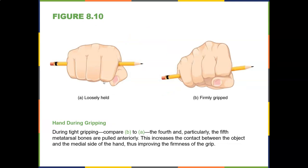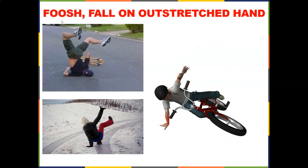Here's the hand during gripping — a loose grip and a firm grip. The pinky is key: if you ever have to lose a finger, you want to lose the index, not the ring or pinky, especially the pinky, because it initiates your grip. For a strong grip, you need the pinky, ring finger, and thumb. FOOSH — fall on outstretched hand — is a common injury mechanism. You can break your scaphoid or the surgical neck of the humerus. Skateboarding is dangerous.